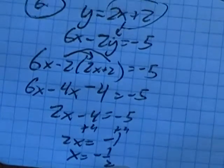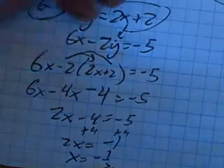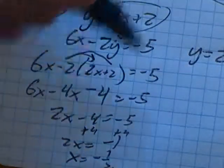So if x is negative one half, I can plug it back in to get my y value. We've got y equals 2x plus 2, but x is negative one half.